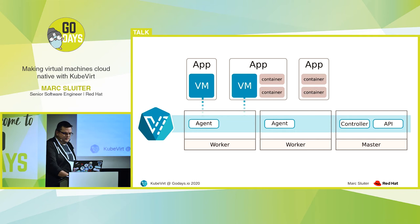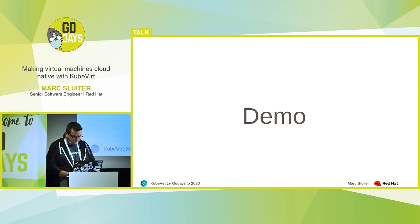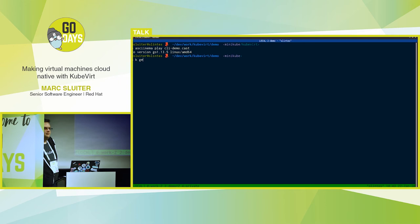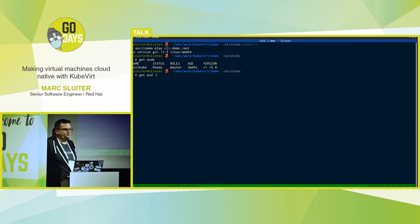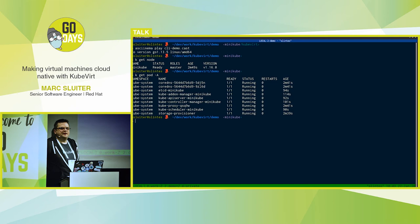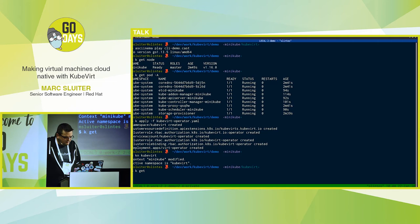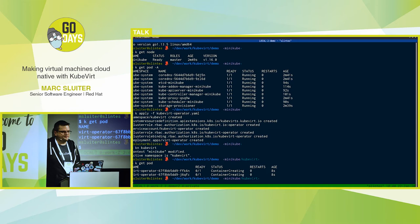So enough theory — let's do a demo. Since I'm not brave enough for live coding, I recorded something. So we have our minikube cluster here with one node. Nothing is installed yet — just the usual Kubernetes pods are running. I already downloaded the installation manifest for KubeVirt, which I'm applying now. This is installing basically the operator. We switch to the KubeVirt namespace, where everything else is going to happen now. And we see that the virt operator is starting up. We need to wait until this is ready.